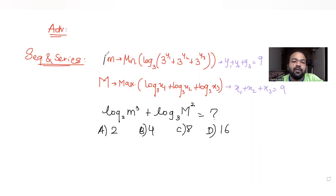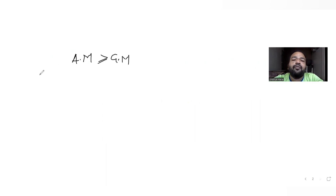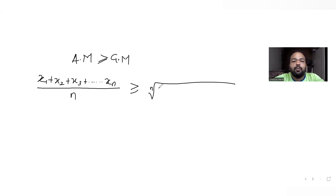We are going to use the result that the arithmetic mean of a list of terms is always greater than or equal to the geometric mean. For a general set of terms x1 to xn, the sum of all terms divided by n (the arithmetic mean) is greater than or equal to the nth root of the product of all terms x1 to xn.